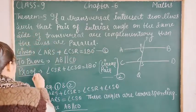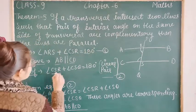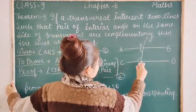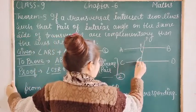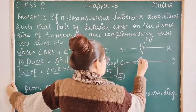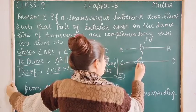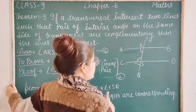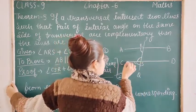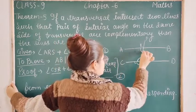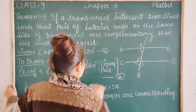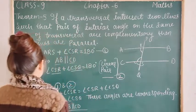We have to prove that angle CSR plus angle CSQ. This angle will be the addition. We have to verify the linear pair condition and verify equation number 2.